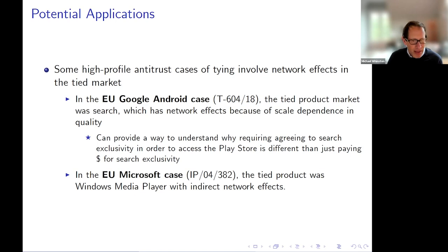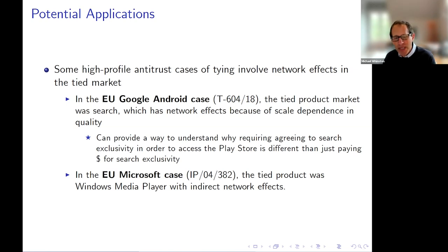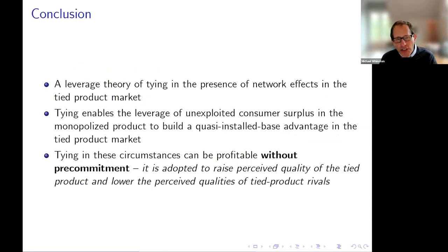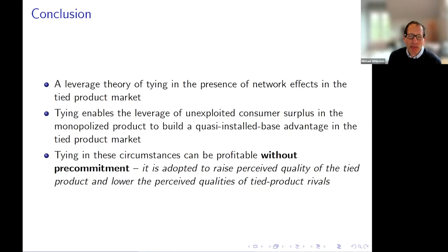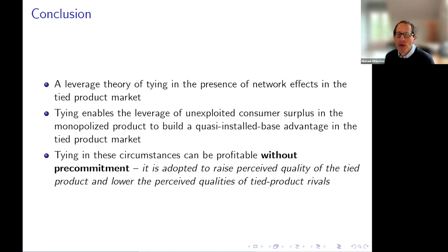In the EU Microsoft case, Microsoft had tied the Windows Media Player to Windows. Windows Media Player has indirect network effects: the more people have the media player, the more applications are written that are compatible with it. The conclusion: we have a leverage theory of tying in the presence of network effects in the tied product market. Tying enables the leverage of unexploited consumer surplus in the monopolized product to build a quasi installed base advantage in the tied product market. Tying in these circumstances can be profitable without any pre-commitment, and what it does is — by starting this bandwagon — raise the perceived quality of the tied product and lower the perceived quality of tied product rivals.